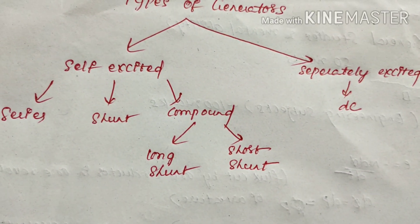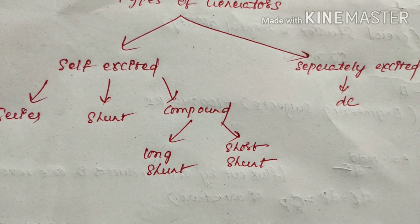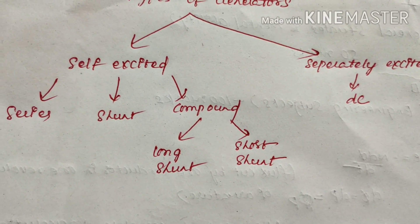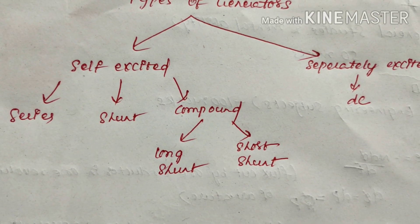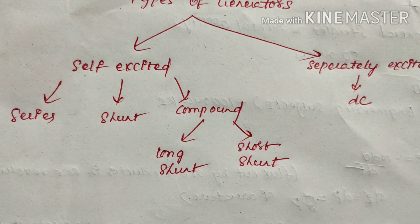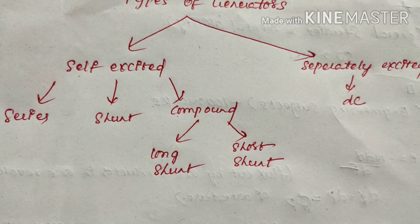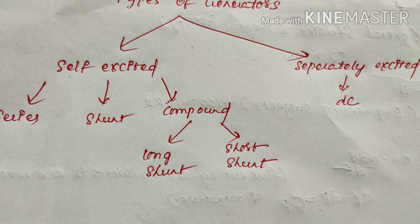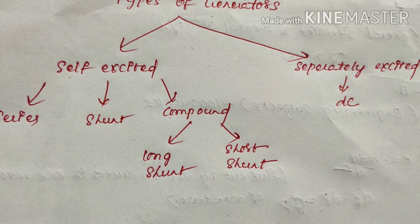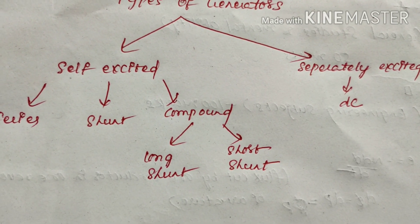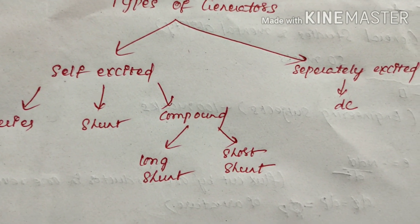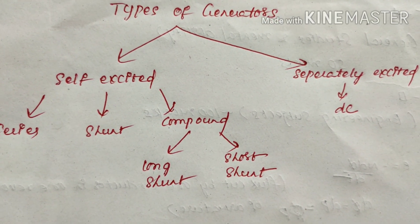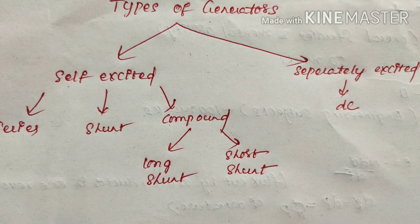Generators are of two types: self-excited generators and separately excited generators. In self-excited generators there are three types: series, shunt, and compound. Compound generators further have two subtypes: long shunt compound and short shunt compound. We will discuss the types of generators in the next class in greater depth.